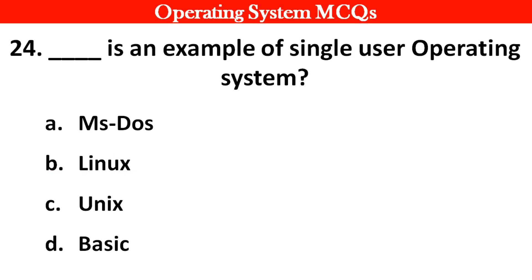Next question: Which is an example of a single-user operating system? Options: A. MS-DOS. B. Linux. C. Unix. D. Basics. Right answer is option A: MS-DOS.